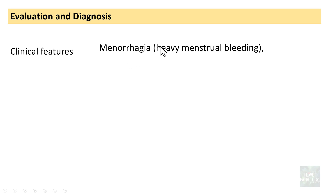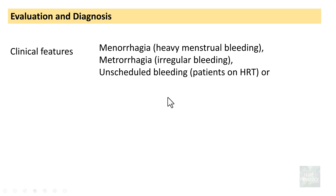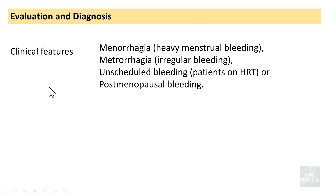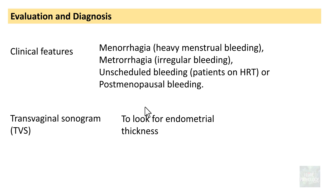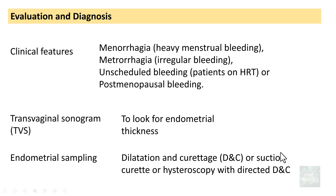Endometrial hyperplasia can present clinically with menorrhagia (heavy menstrual bleeding), metrorrhagia (irregular bleeding), unscheduled bleeding in patients on hormone replacement therapy, or postmenopausal bleeding. Transvaginal sonogram (TVS) can assess endometrial thickness, but the gold standard for diagnosis is endometrial sampling, obtained via dilatation and curettage, suction curettage, or preferably hysteroscopy with directed dilatation and curettage.